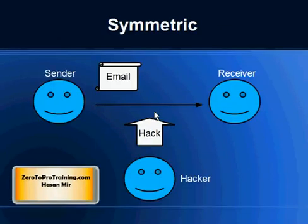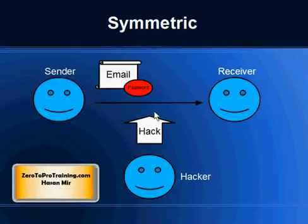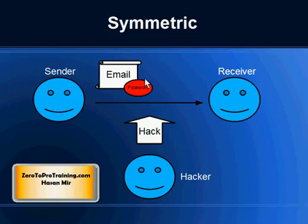Here is a situation: this is a sender, this is the receiver. The sender wants to send an email to the receiver, and we have a hacker who will try to hack the communication. If the sender sends an email without any encryption, the hacker can get hold of the message and this will defeat the whole purpose. To solve the problem, the sender came up with a technique — he locked the email using a password. Now nobody can read this email until they have the password, so this is symmetric encryption. The email has been encrypted and it can be decrypted using the same password that was used to encrypt it.